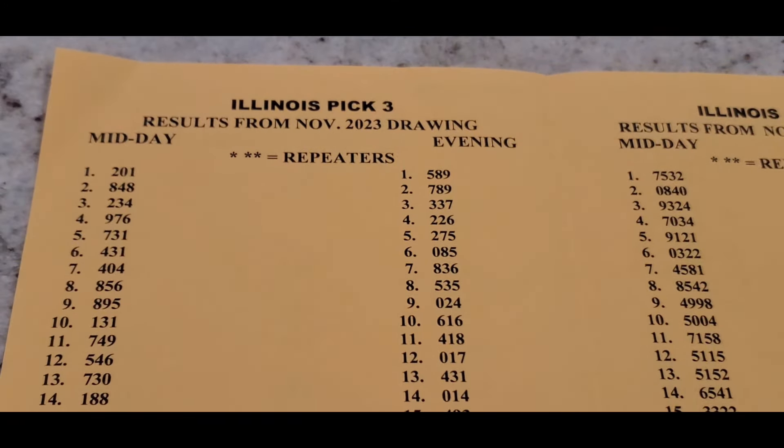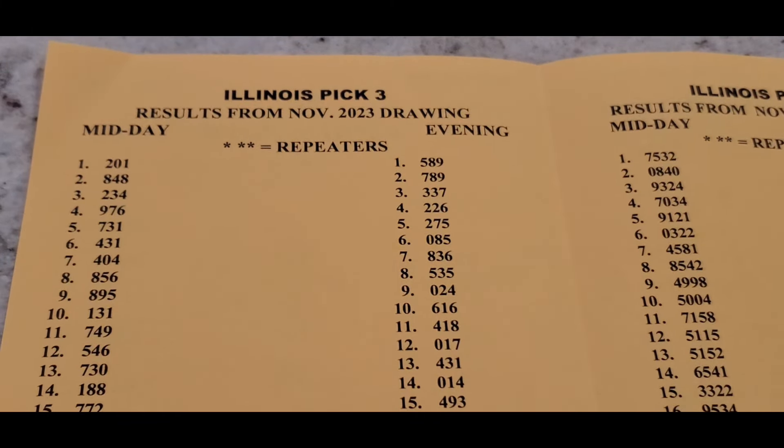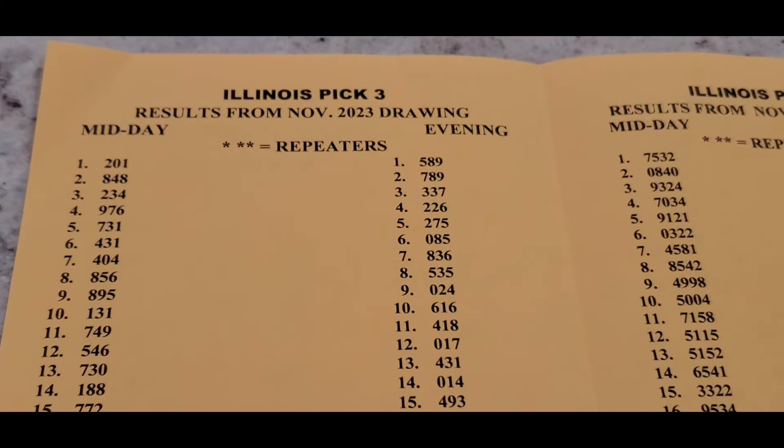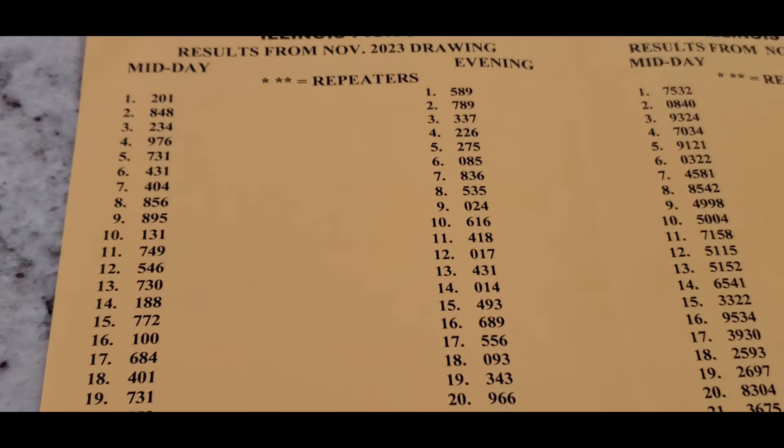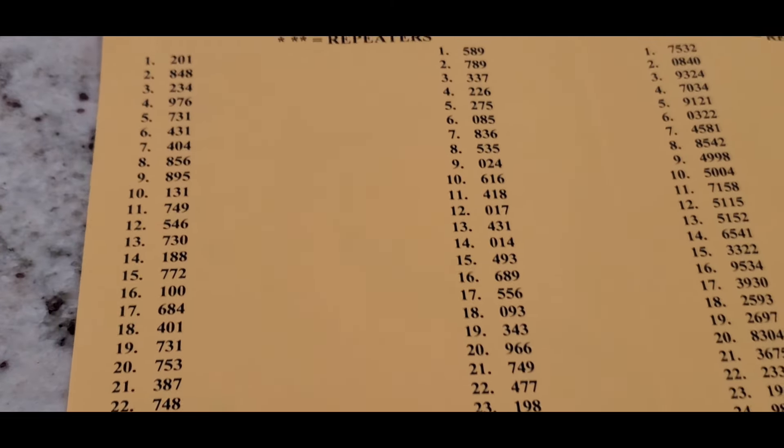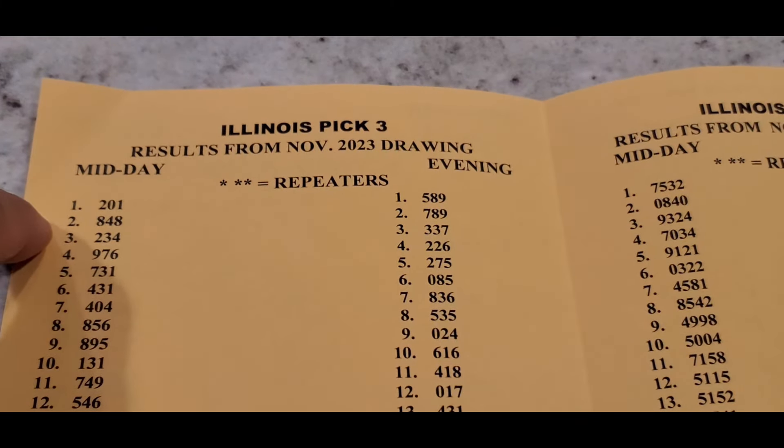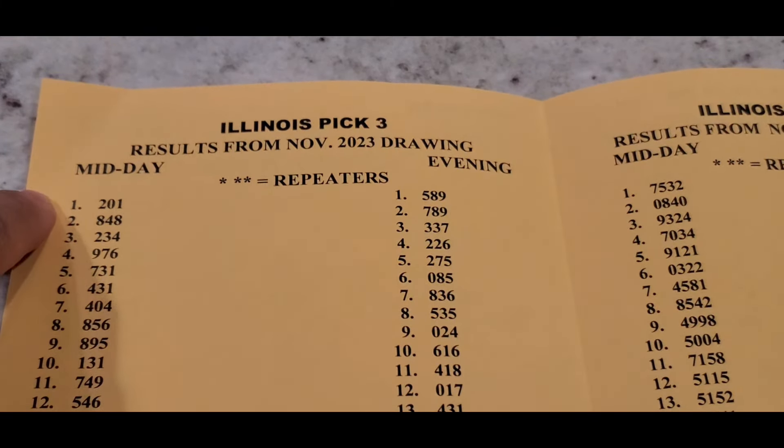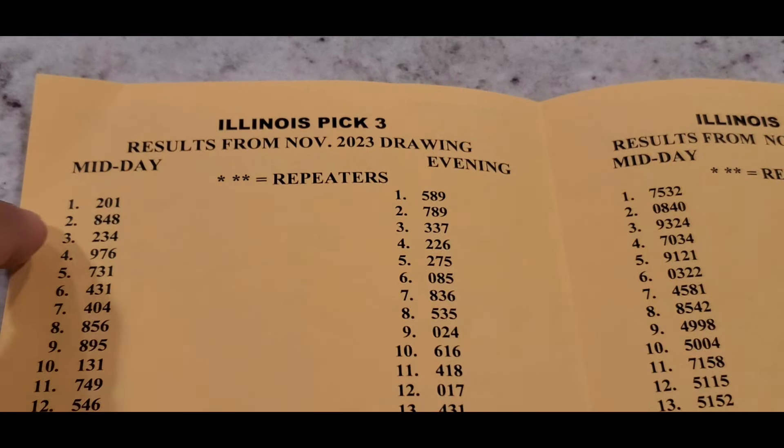Make sure you guys are subscribed and hit the notification so you're alerted when these videos drop as we view them together. So we go for the Illinois lottery right here. It goes by the number of days in November. November has 30 days. So if you're catching this review video on the first, your midday number would be 201 and 589 will be your evening number. Illinois has two draws, midday and evening. And if you catch it on the second, 848 and 789.